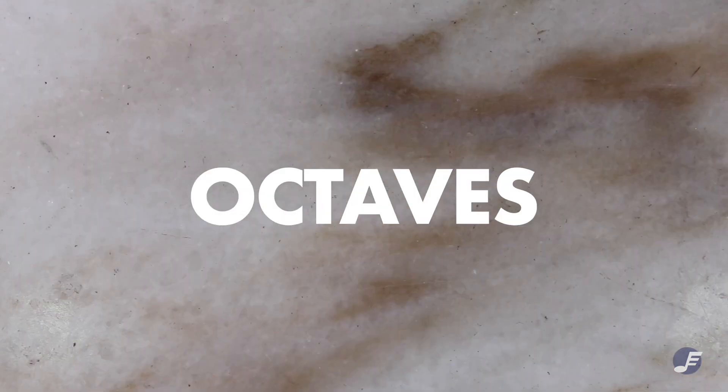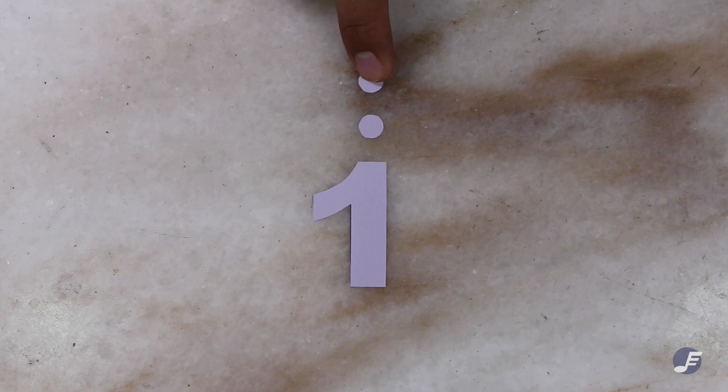Now, how do we determine how high or low the notes are in jianpu? Simple, we use dots. One dot above represents one octave up. Add another dot if you wish to go an octave higher.